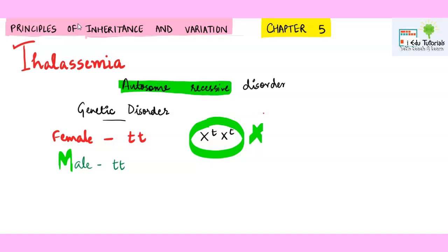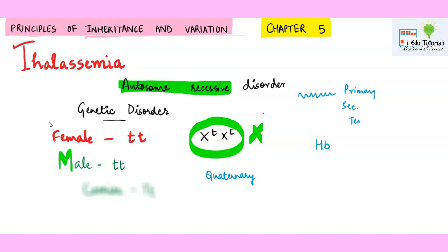Males also will show the similar type of defective alleles. Now, hemoglobin is present in the RBC and it exhibits quaternary structure of a protein. Quaternary structure means it has four polypeptides. If any protein is made up of more than one polypeptide, it exhibits quaternary structure, whereas if a protein contains only one polypeptide, it can exhibit primary, secondary, or tertiary structure.